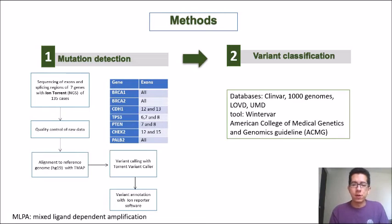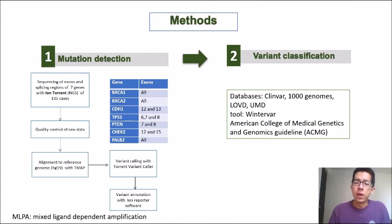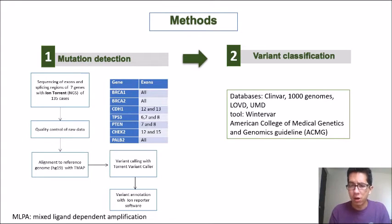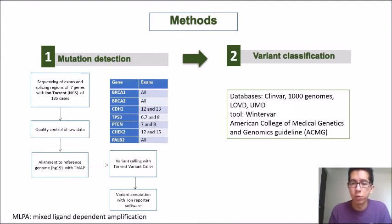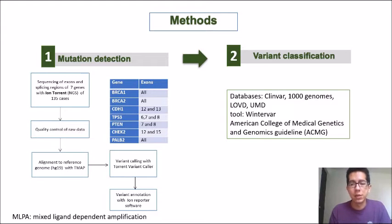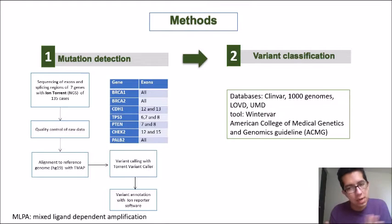After obtaining the variants, we needed to determine their clinical significance. We searched databases such as ClinVar, 1000 Genomes, GnomAD, and the UMD, and we also used bioinformatic tools such as Intervar, which applies the American College of Medical Genetics and Genomics guidelines for classifying variants.